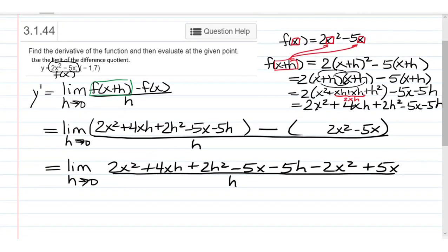Now, what often happens in these problems is all of the terms that don't have an h in them cancel out. That's going to be important when we go to evaluate the limit in a minute. So, for example, positive 5x and negative 5x cancels out. 2x squared and negative 2x squared cancels out. So, we're left with the limit as h goes to 0 of 4xh plus 2h squared minus 5h all over h.